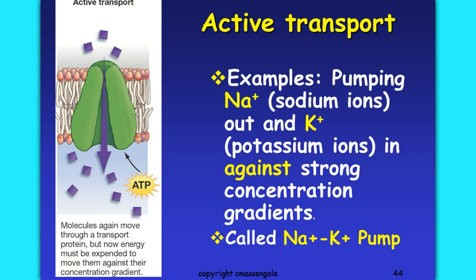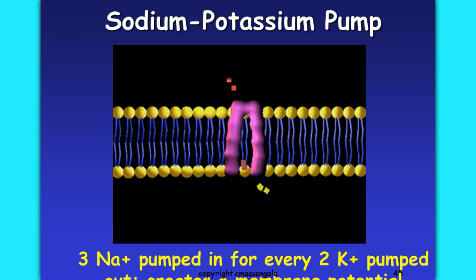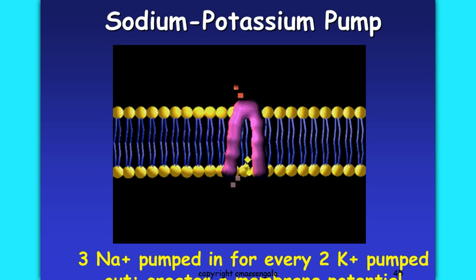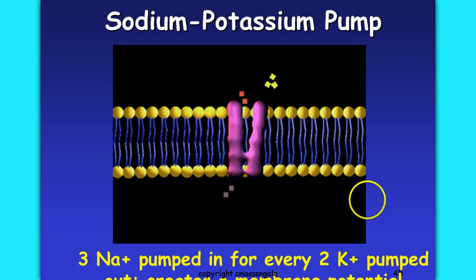Some examples of active transport in cells include the pumping of ions. There's something called the sodium-potassium pump, which pumps sodium ions out of the cell and potassium ions into the cell against a strong concentration gradient. Let's watch what's going on here.